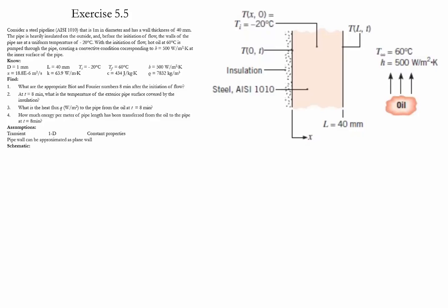We also need to find the temperature at the exterior of the pipe at that particular time. We need to find the heat flux to the pipe from the oil at time equal to 8 minutes, and calculate how much energy per meter of pipe length has been transferred from the oil into the pipe.